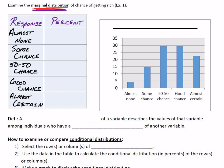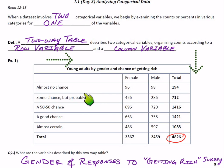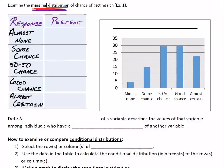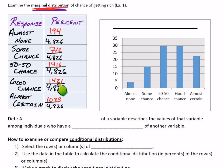What percent of young adults said almost no chance? Notice I didn't ask about gender — regardless of gender, the right calculation is 194 out of the total 4826. Similarly, what percent said some chance but probably not? That's 712 out of the total. For each response, they're all out of the table total of 4826: almost no chance is 194, some chance is 712, 50-50 is 1416, good chance is 1421, and almost certain is 1083.